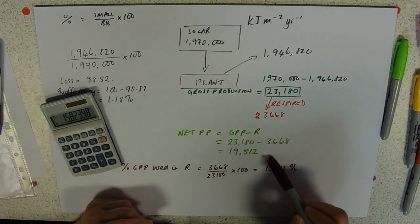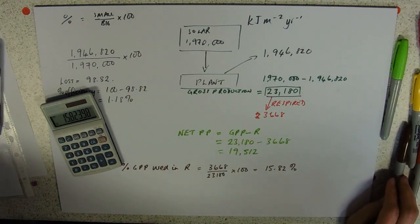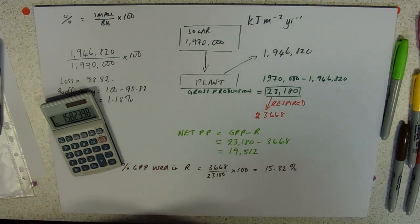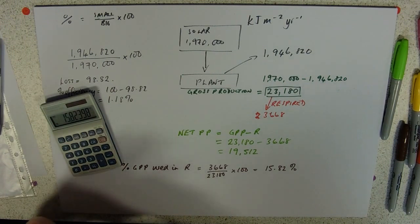What can happen to your net production then is that it can be passed on to the next trophic level because it can be eaten, or of course the leaf might not be eaten and might just end up on the floor with the decomposers.